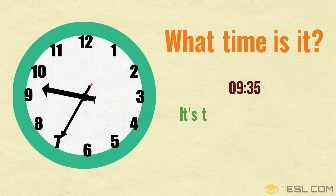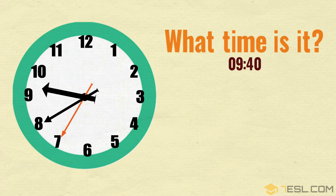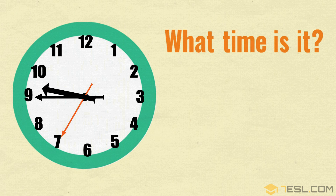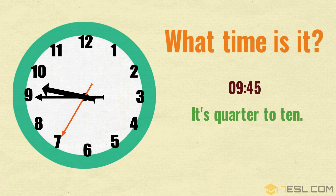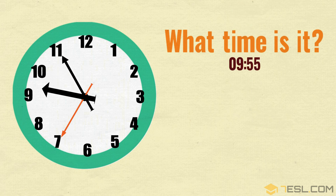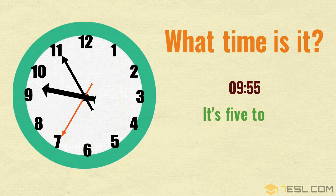9:35 — it's twenty-five to ten. 9:40 — it's twenty to ten. 9:45 — it's quarter to ten. 9:50 — it's ten to ten. 9:55 — it's five to ten.